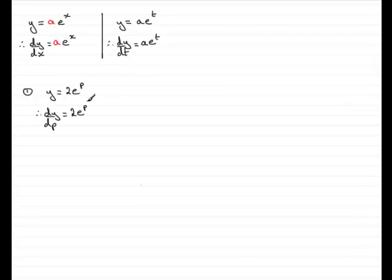But what happens if, instead of having x or t or p, we've got something far more complicated than that, like this example, number 2, suppose we have y equals 3e to the x squared, say. Notice that we just haven't got x anymore, but now we've got x squared. Well, we have to do something different. We have to use what is called the chain rule.